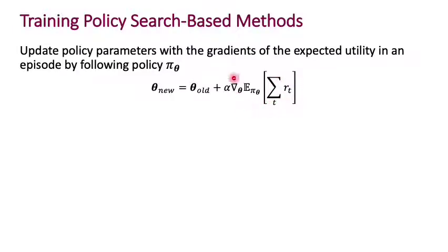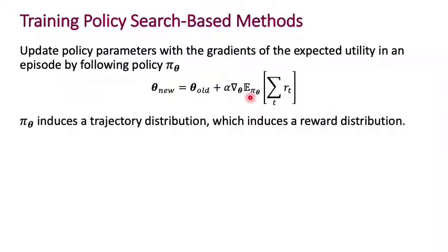The value that's increasing is the expected utility under the policy. Every policy corresponds to some trajectories — a policy induces a distribution over trajectories, which are state-action sequences. These trajectories have corresponding rewards, so you can think of every policy as inducing a distribution over rewards. The rewards are measured under the distribution of trajectories induced by this policy — we're taking the expectation of the rewards under the policy.